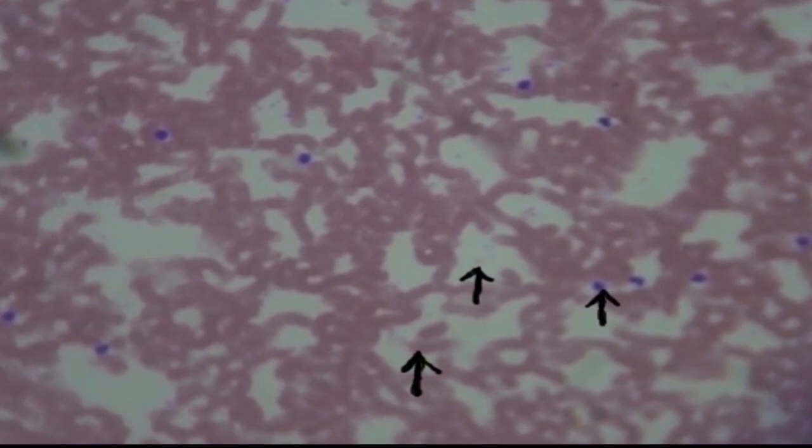Okay, so just to recap blood, the four parts of blood that you will need to know is the ground substance, which is plasma. The red blood cells, which do not have a nucleus. The white blood cells, which do have a nucleus. And then the platelets.